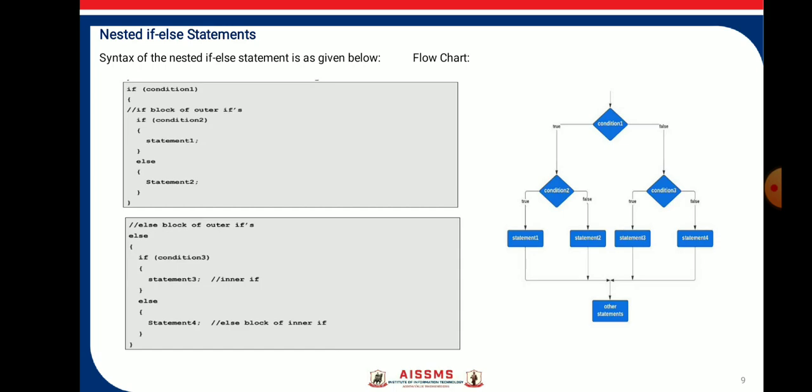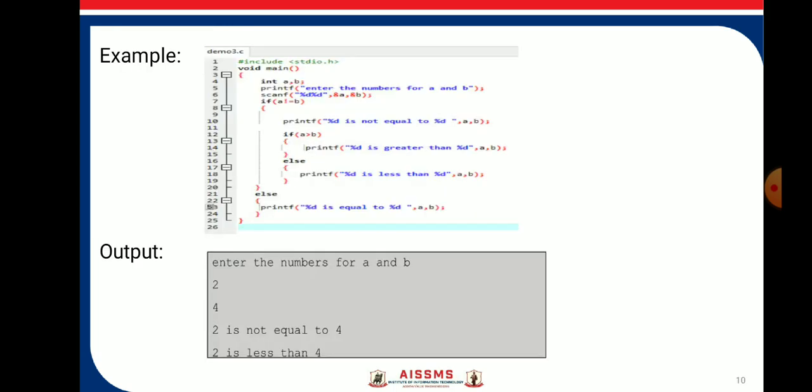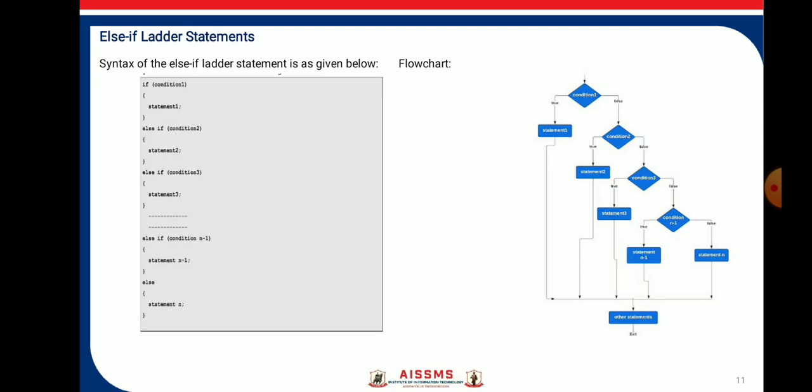Here is the syntax and flowchart of the nested if-else statement — nested means an if-else within an if-else condition. Here is the example: enter two numbers a and b, given values 2 and 4. If 2 is not equal to 4 and 2 is less than 4, the corresponding nested condition is evaluated.